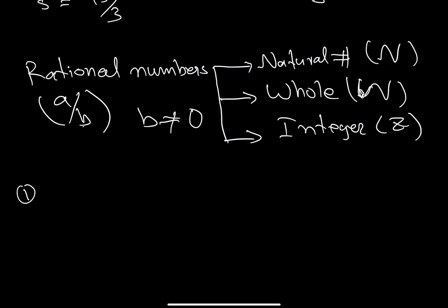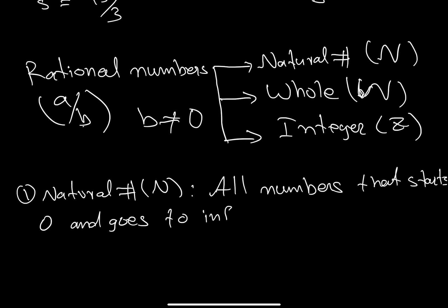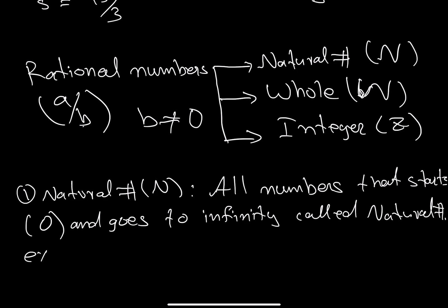Let's talk about natural numbers. Natural numbers are all those numbers that start from 1 and go to infinity. Note: it starts from 1, not 0 — that would be whole numbers.